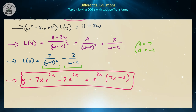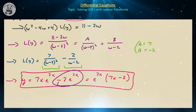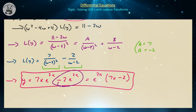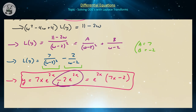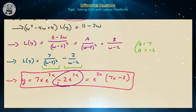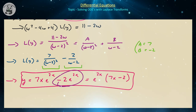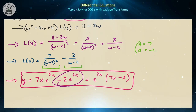Inverting the Laplace transform gives y equals 7x e to the 2x minus 2 e to the 2x, or equivalently e to the 2x times (7x minus 2). A small change in initial condition didn't just rescale the solution — it fundamentally changed its behavior from a constant-exponential product to a linear-exponential product, which can differ greatly in long-term behavior.